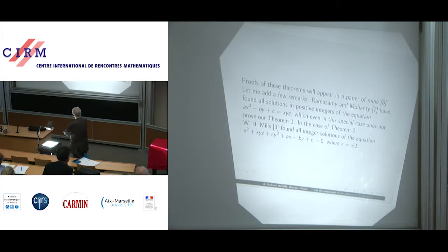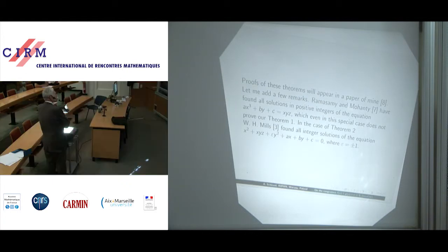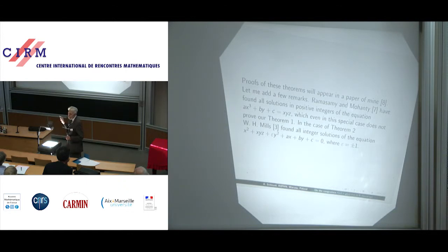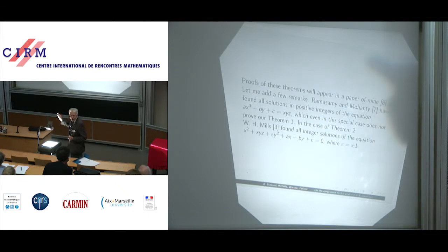In the case of Theorem 2, W.H. Mills found all integer solutions of the equation x squared plus xyz plus epsilon y squared plus Ax plus By plus C equals 0, where epsilon equals plus or minus 1. One can write this as a congruence modulo xy. So in this case there is a definite advantage in comparison with my theorem, because he found all integer solutions, whereas I only assert that there exist infinitely many integer solutions.